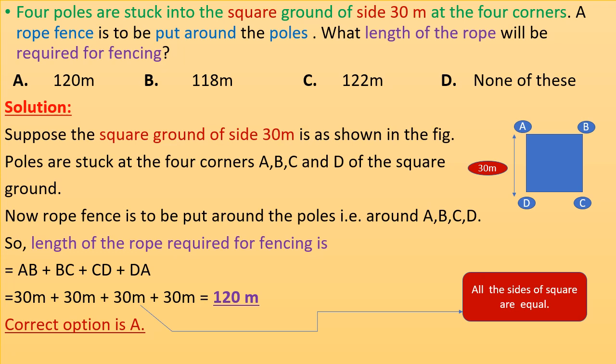Four poles are struck into the square ground of side 30 meters at the four corners. A rope fence is to be put around the poles. What length of rope will be required for fencing? The square ground of side 30 meters is as shown in the figure. Poles are stuck at the four corners A, B, C, and D of the square ground.